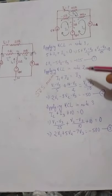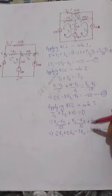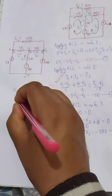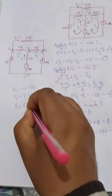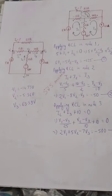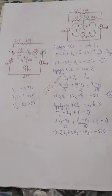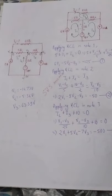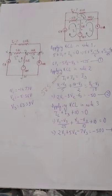Solving Equations 1, 2, and 3 simultaneously gives the node voltages: V1 = −14.73 V, V2 = −5.36 V, and V3 = 63.39 V. It is recommended that you verify the three equations and simplify them yourself, as there may be minor errors in the manual calculation. If the equations are correct, you should obtain approximately these values.